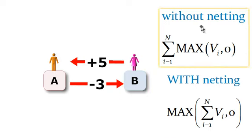Now, without netting, the potential losses to counterparty A here are given by this formula. So it's just the max of each of the transactions and zero. So from counterparty A's perspective, without netting, the potential loss here is five plus zero, because zero is the max of negative three and zero.